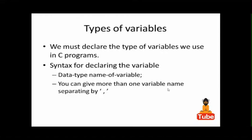Now let's see the types of variables. Type of variables means what type of variable we want to use. We use the syntax: data type as we discussed—integer, character, float—and the name of variable we want to assign. We can give more than one variable separating by a comma.